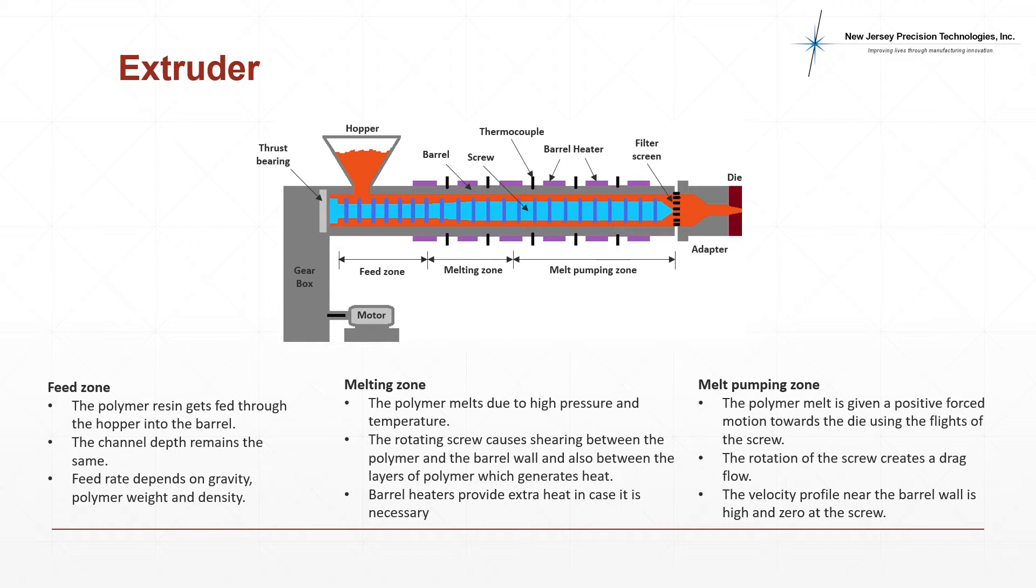The feed zone is where the polymer is introduced through a hopper into the barrel. The channel depth in the feed zone is constant. The rate of polymer feed depends on gravity, weight, and density of the polymer.